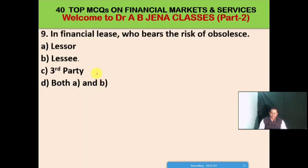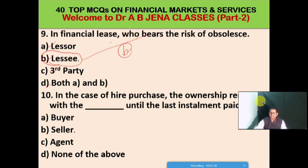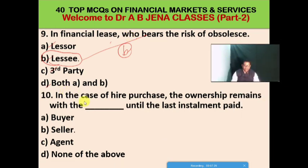Next MCQ: in financial lease, who bears the risk of obsolescence? A: lessor, B: lessee, C: third party, D: both A and B. B is the right option — in financial lease, the lessee bears the risk of obsolescence. Next MCQ: in the case of hire purchase, ownership remains with the dash until the last instalment is paid.